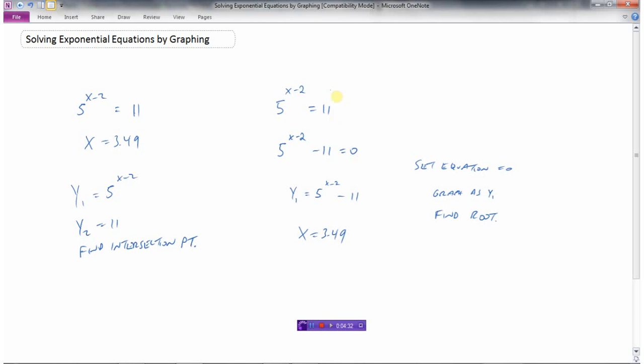The second way would be to take your equation, do a little bit of algebra to set it equal to zero—so move the right side over to the left side—then just graph the one function and find the root. You want to find out where that function equals zero. So that's how we can solve exponential equations by graphing.